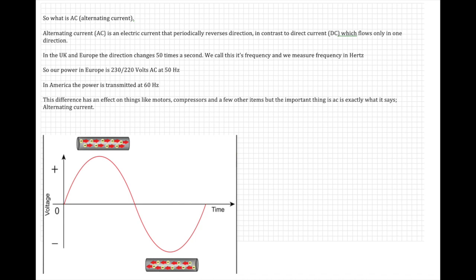In the UK and the rest of Europe, that direction changes 50 times a second. We call this its frequency and we measure frequency in Hertz. So our power in Europe is 230, 220 volts AC at 50 Hertz.